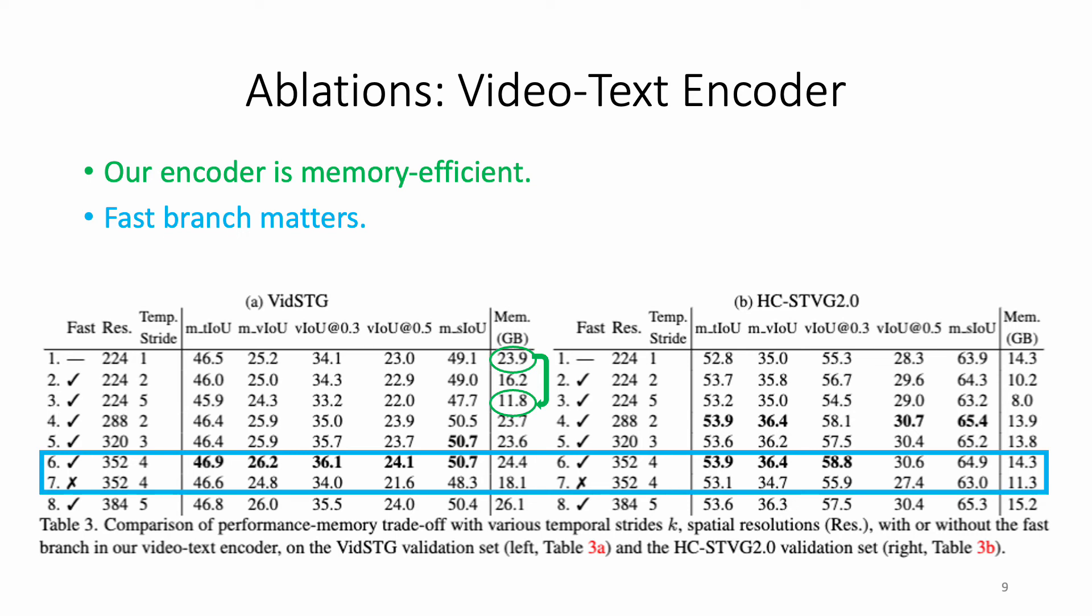We also show that the fast branch significantly helps spatial-temporal video grounding performance with low computational memory overhead.